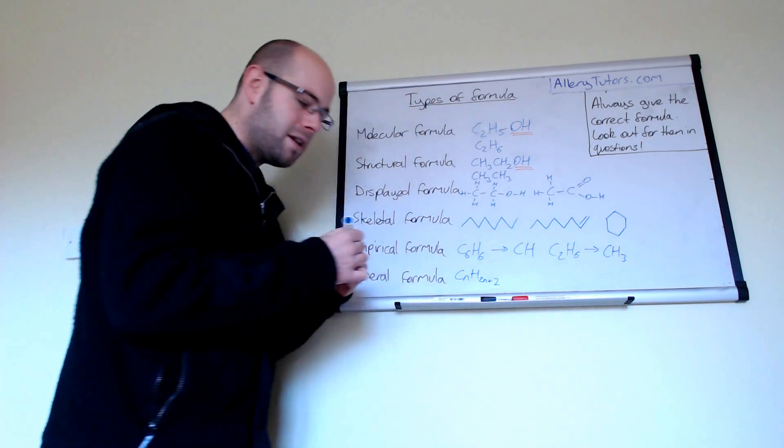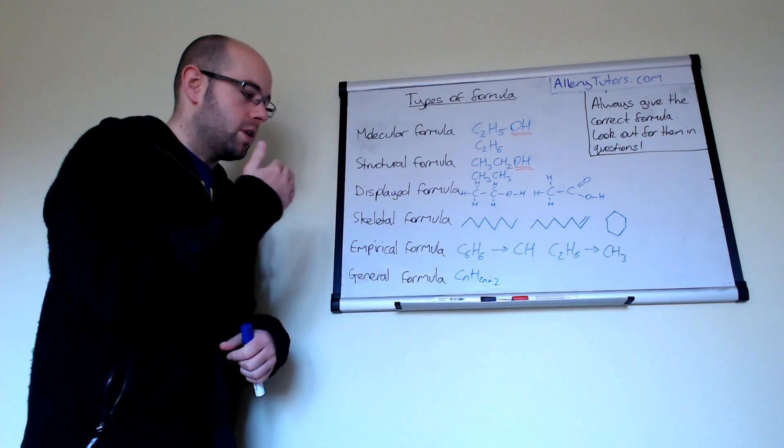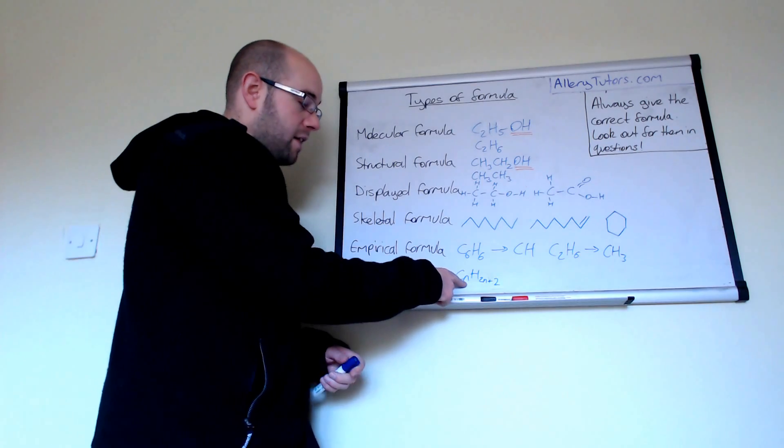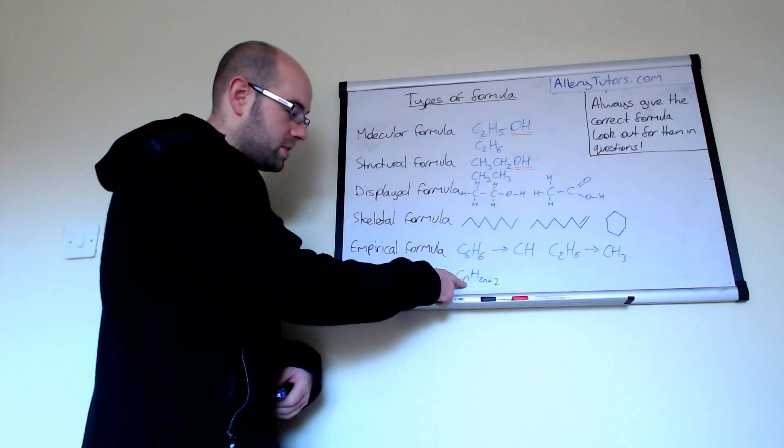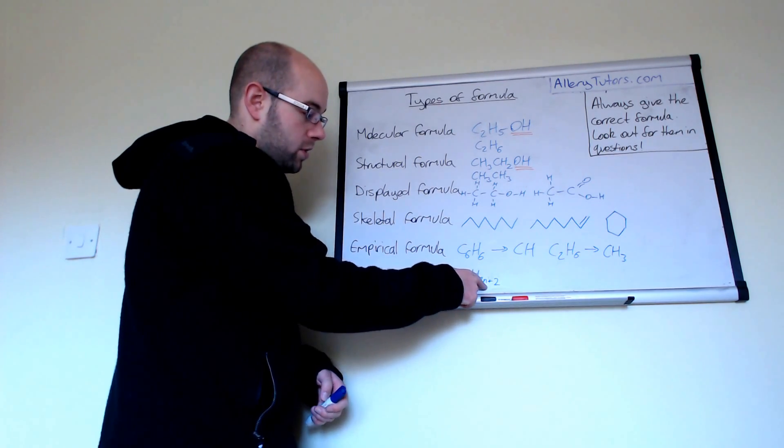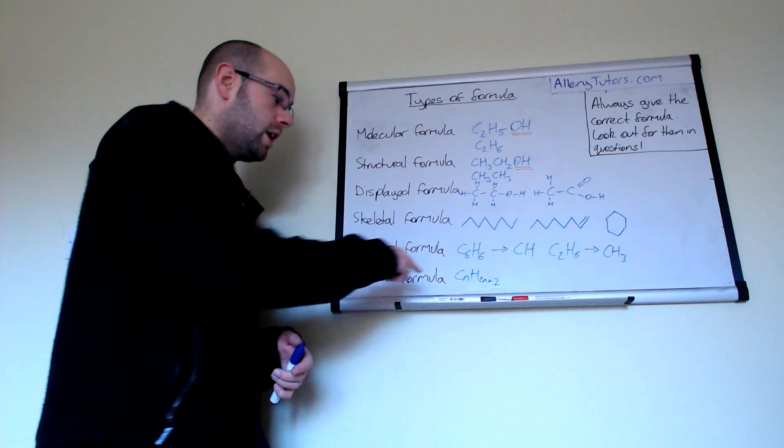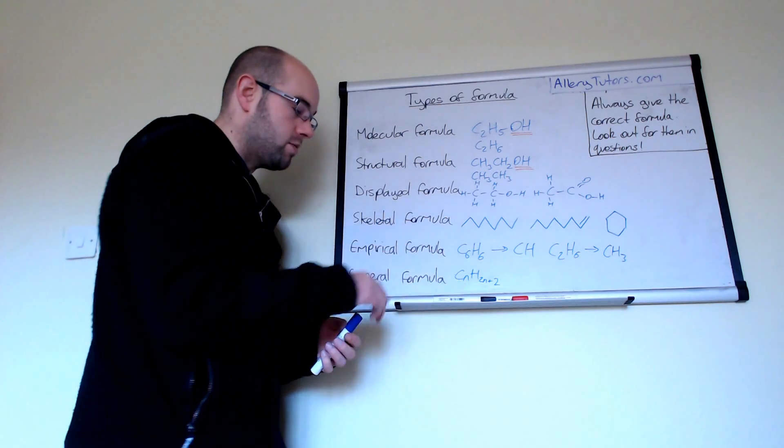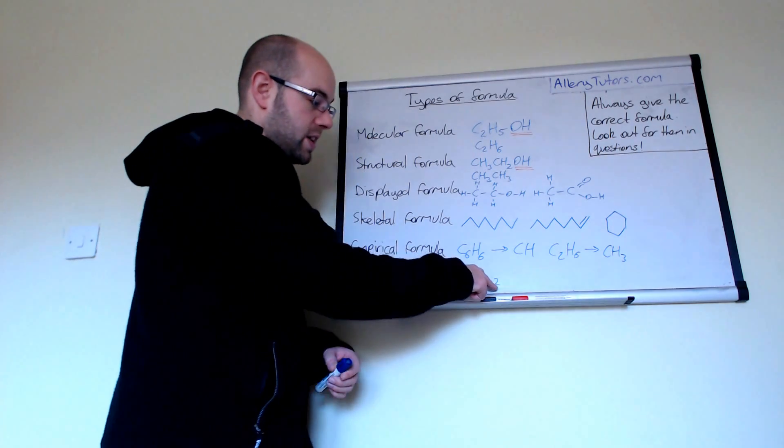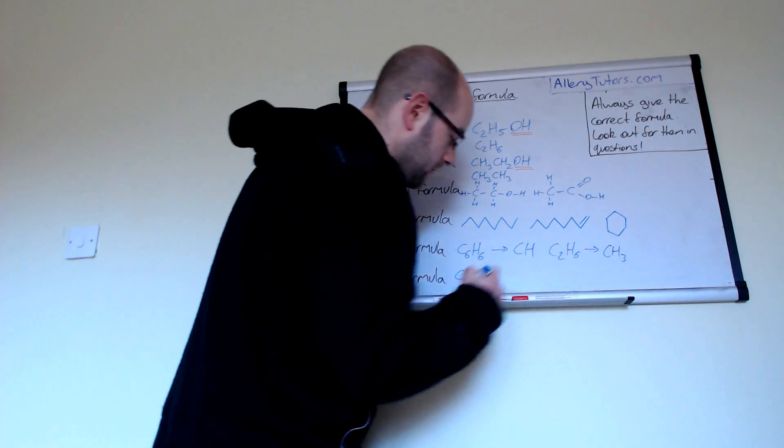Now the n bit stands for the number of carbons, so what we mean here is that if we have two carbons here so n is two then we would have two lots of two which would be four plus two which would be six. So our formula for a hydrocarbon with two carbons in there would be C2H6 and so that's our general formula for an alkane.